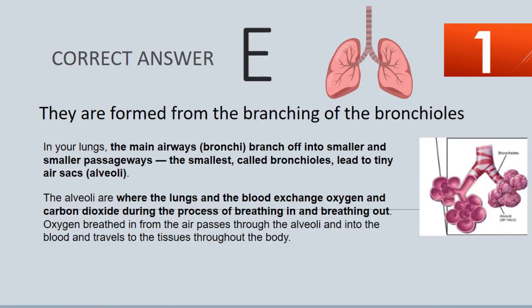The correct answer is E. In your lungs, the main airways, bronchi, branch off into smaller and smaller passageways. The smallest, called bronchioles, lead to tiny air sacs called alveoli. The alveoli are where the lungs and the blood exchange oxygen and carbon dioxide during the process of breathing in and breathing out. Oxygen breathed in from the air passes through the alveoli and into the blood and travels to the tissues throughout the body.